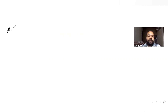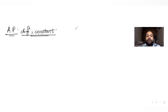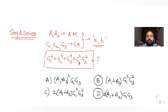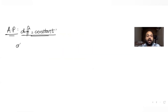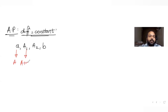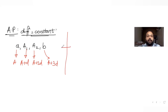Let's first consider the arithmetic progression. In an AP, the difference between consecutive terms is constant. If we insert two arithmetic means between a and b, we have the four terms: a, a1, a2, b. Writing these as a, a+d, a+2d, a+3d, we get that b equals a plus 3d, so the common difference d equals (b minus a) divided by 3.